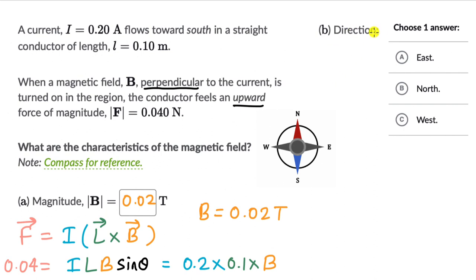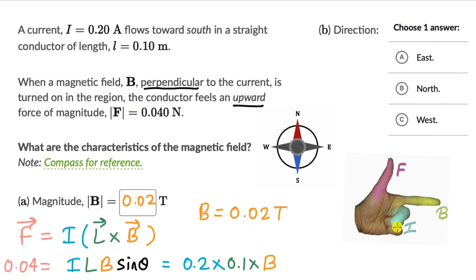Now for direction, we use Fleming's Left Hand Rule: arrange the thumb, index finger, and middle finger perpendicular to each other. The thumb gives the direction of force, the index finger gives the magnetic field direction, and the middle finger gives the current direction. In this case, we know the direction of the force (upward) and the direction of the current (south), so we need to find the direction of the magnetic field.